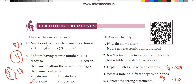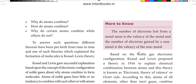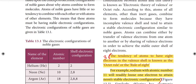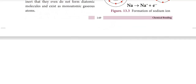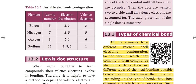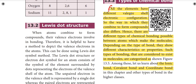Fourth question: write a note on different types of bonds. All elements have different valence shells. Such types of bonding characterized to exist in molecules are: ionic bond, covalent bond, and coordinate bond.